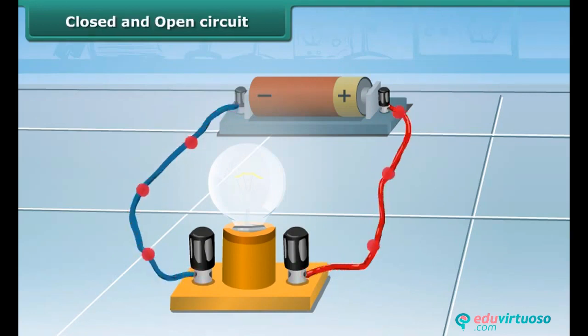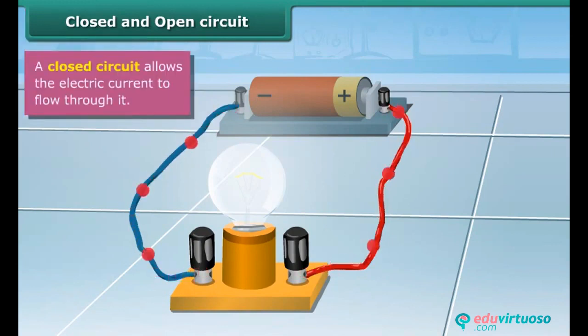If you see both the wires are connected to both the terminals, it is an unbroken path. It is a closed circuit.